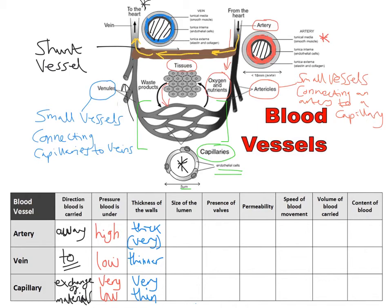Let's look at the size of the lumen — the hole within the tube. The size of the lumen for the artery is narrow, and a narrow lumen helps to maintain a very high blood pressure. For a vein, we have a large lumen, and that's to help reduce resistance to blood flow. For a capillary, the lumen is very narrow, and despite being very narrow, it actually allows blood to flow much more slowly.